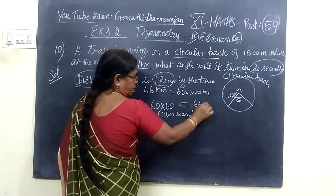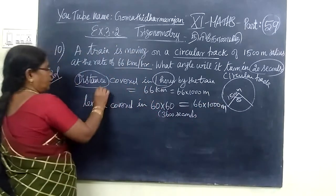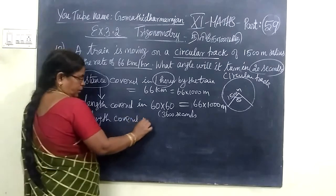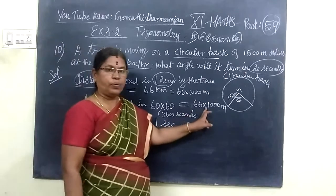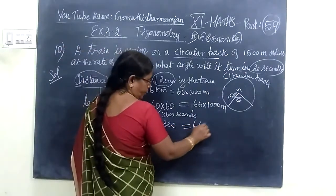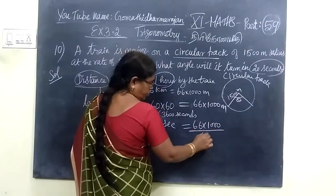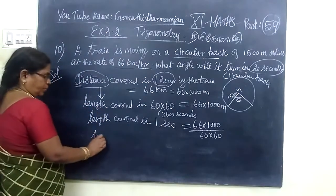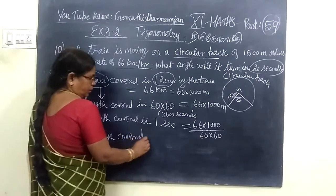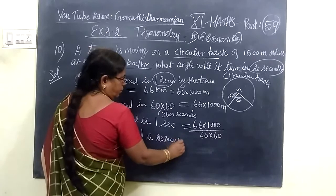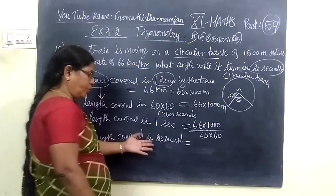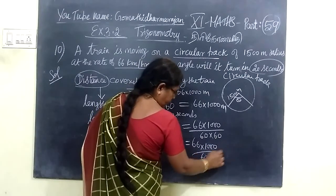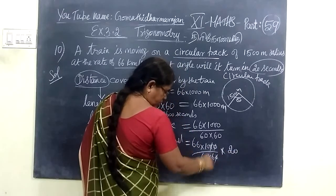So, length covered in one second: 3600 seconds gives 1 second. Now divide the interval. So 16 into 50. Length covered in 20 seconds: 60 into 1000 by 60 into 60, that means multiplied by 20.